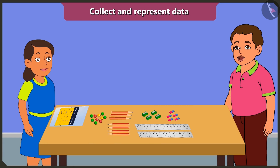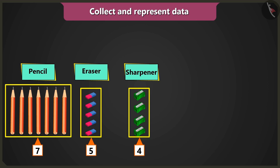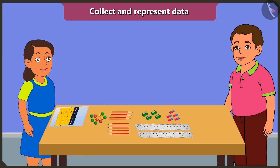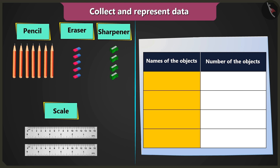Let me teach you one more way to collect the data and fill it in the table. Definitely. Firstly, you have to group the given objects whose data you wish to collect. I have seven pencils, five erasers, four sharpeners, and two scales. Now, you have to create a table for the same. I have made this table. I wrote the names of the objects in the first column and count of objects in the second column.